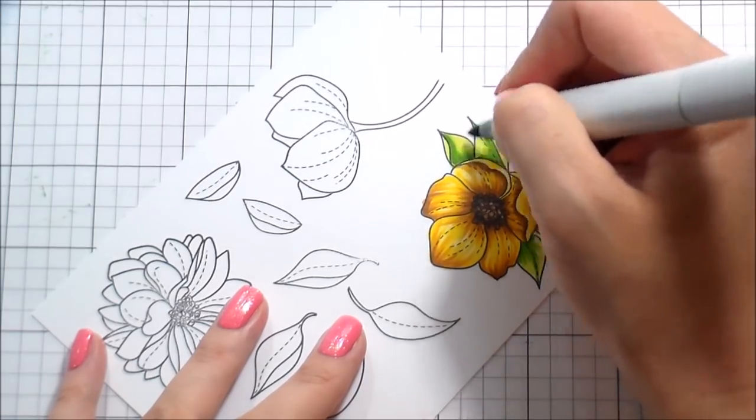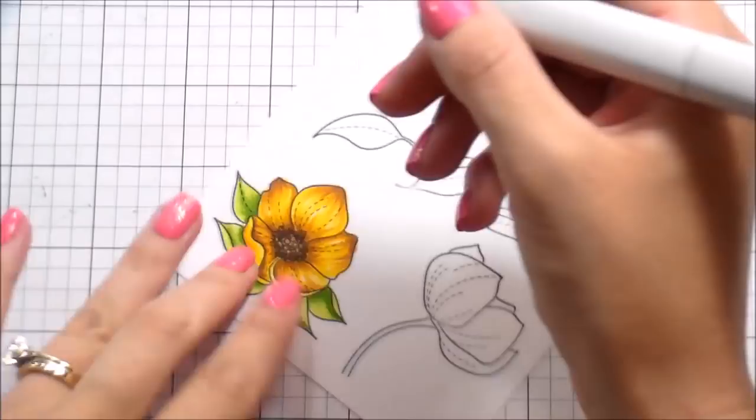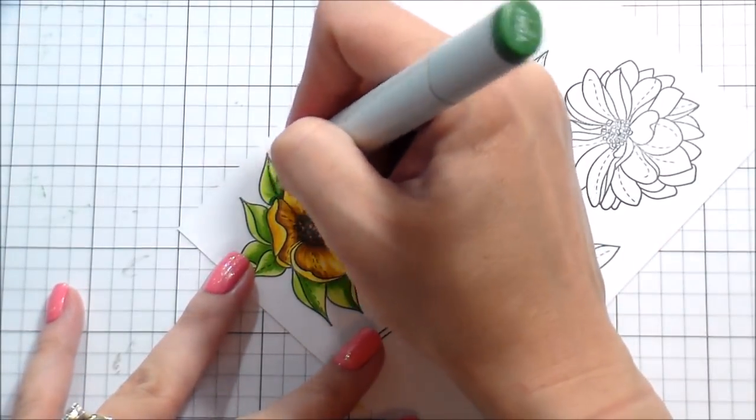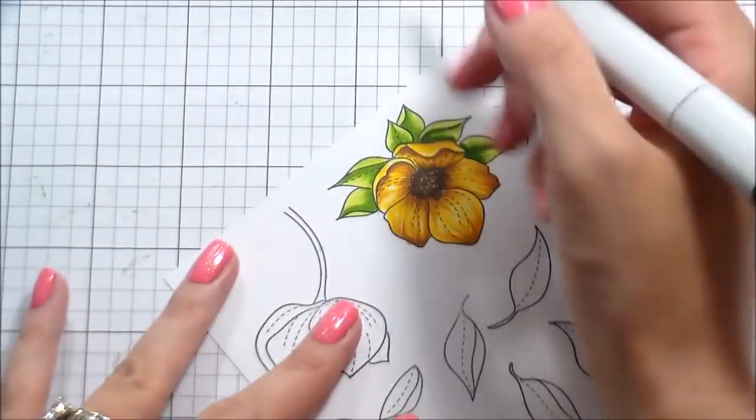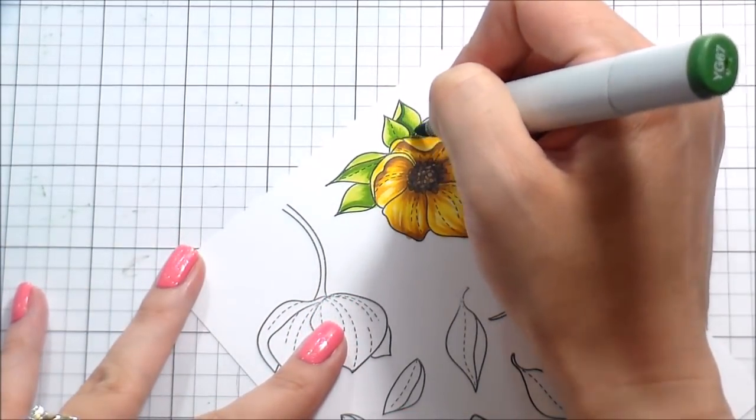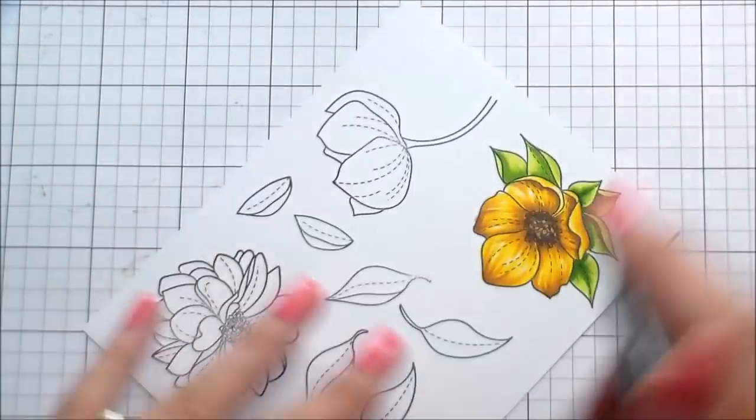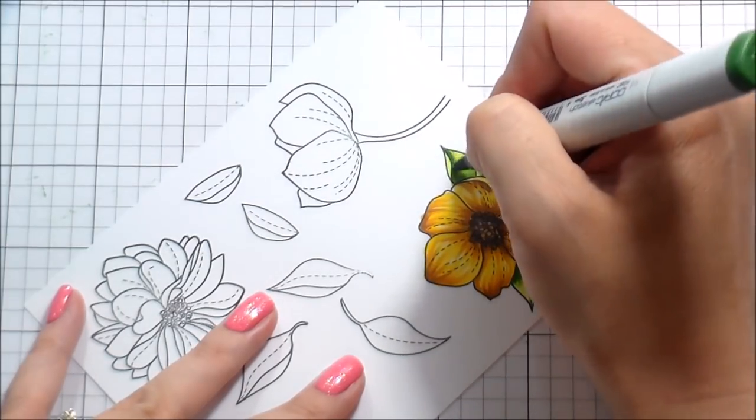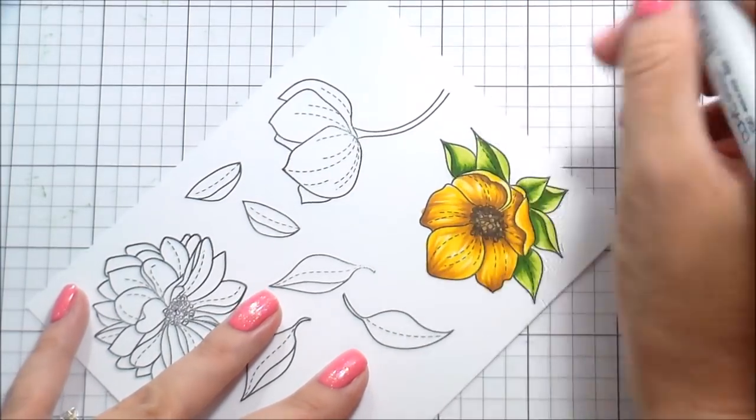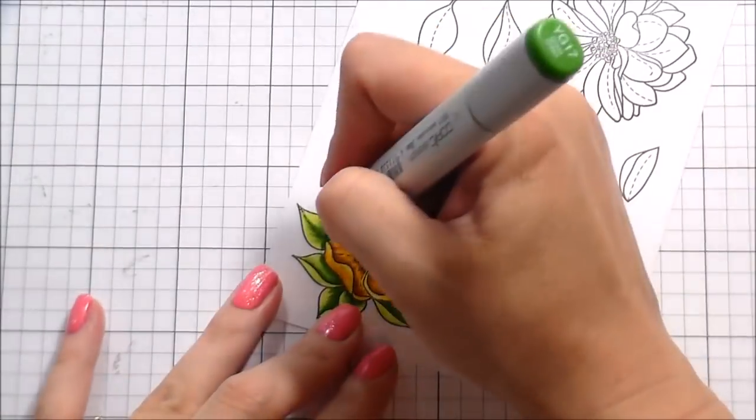That is a struggle for me as well because I do want them to look similar, like they go together, but to get that dimension in real life, things aren't matchy-matchy except for my nail polish and my outfit. So like this one here where it's underneath two petals, that one is definitely going to be darker than all of the other leaves.